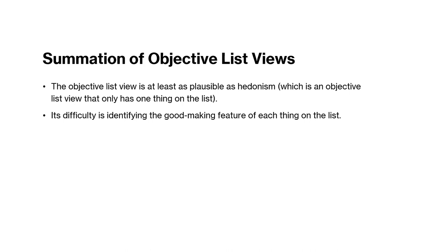Finally, a quick summation of objective list views. The objective list view is at least as plausible as hedonism, because hedonism is itself a kind of objective list view — it just has only one thing on the list: pleasure. These theories have a lot in common; where they differ is whether all intrinsic value reduces to one kind — pleasure — or whether it doesn't. The main difficulty any list view must deal with is identifying the good-making features of each thing on the list: why does it get to be there, and how do you tell what goes on the list versus what gets left off?